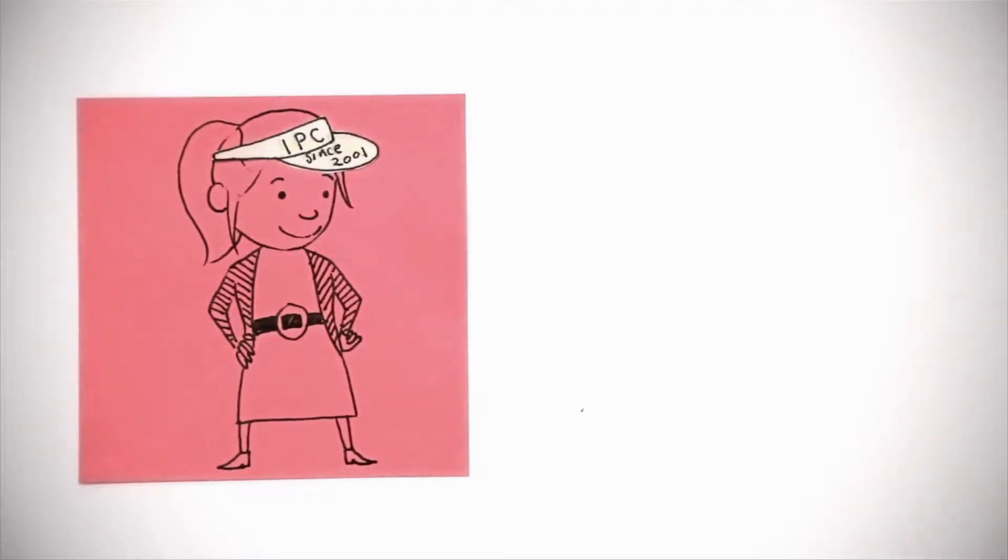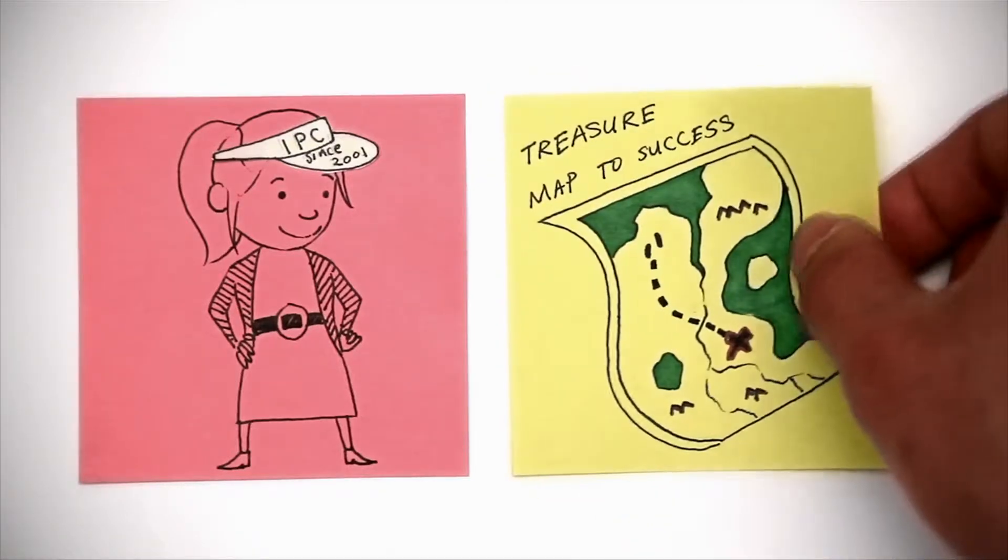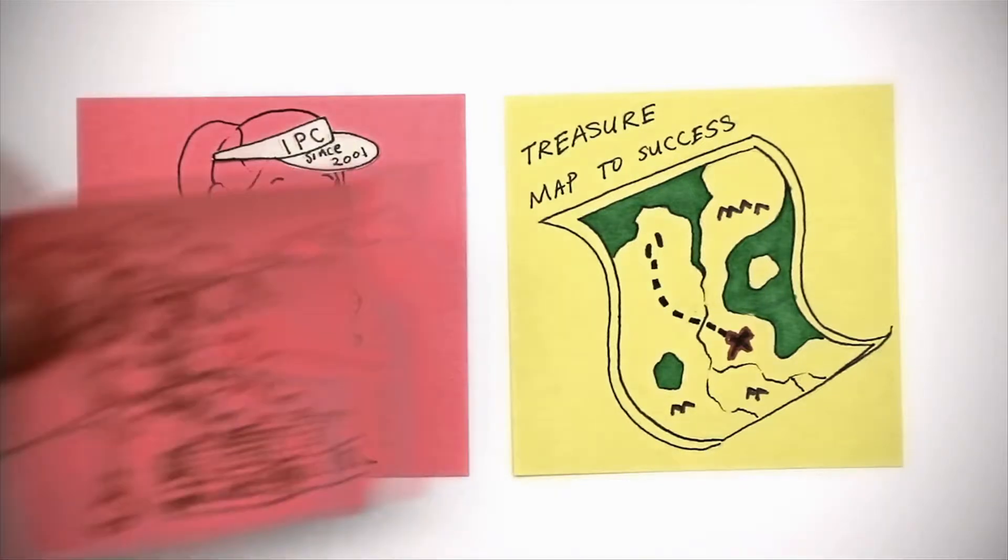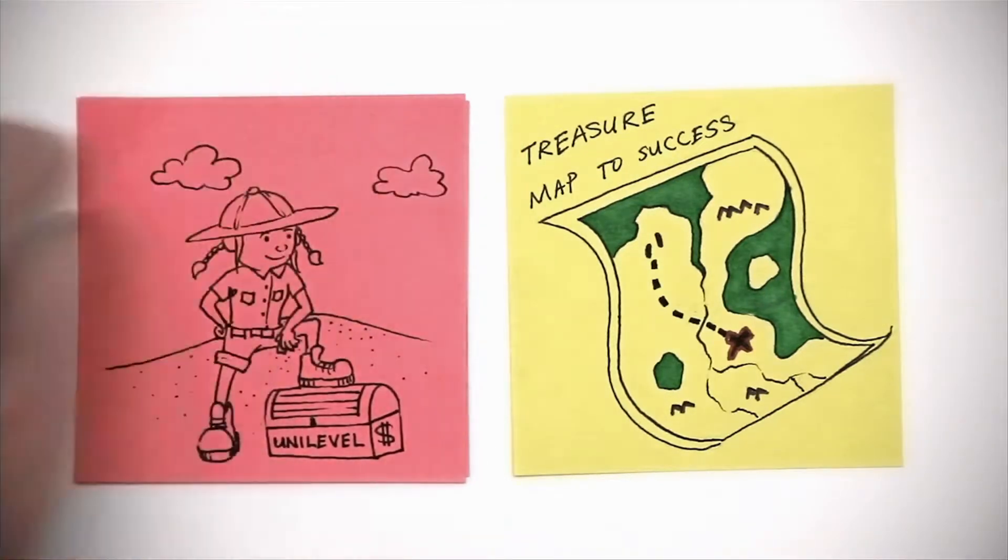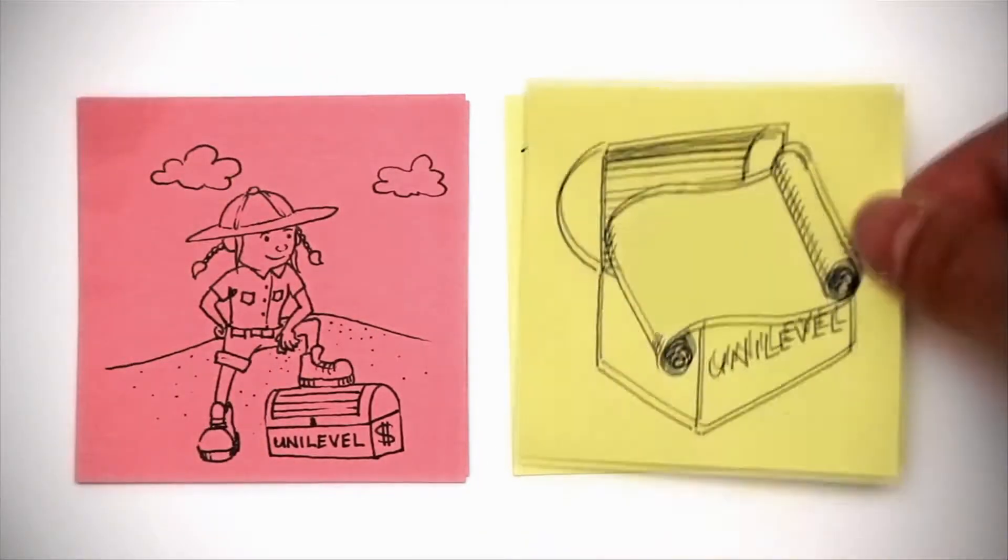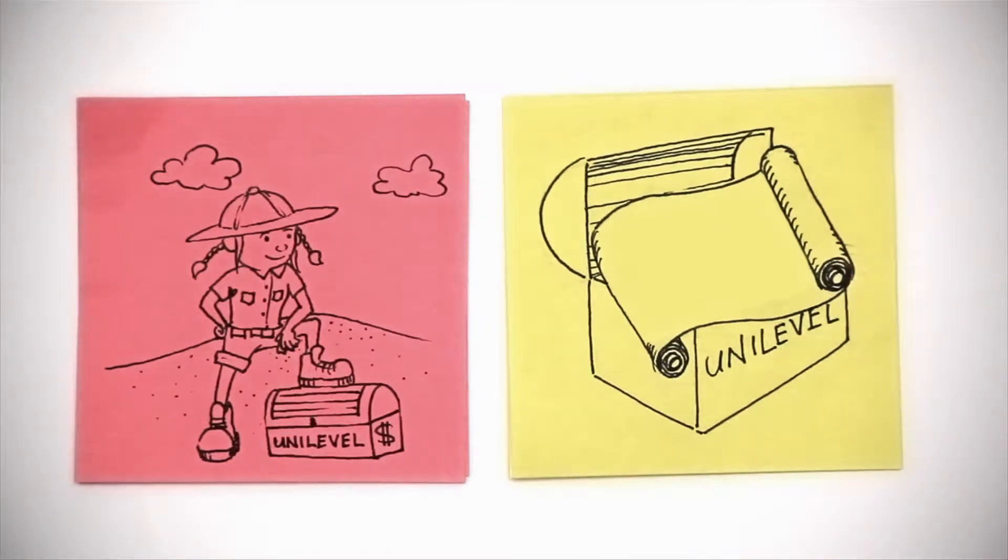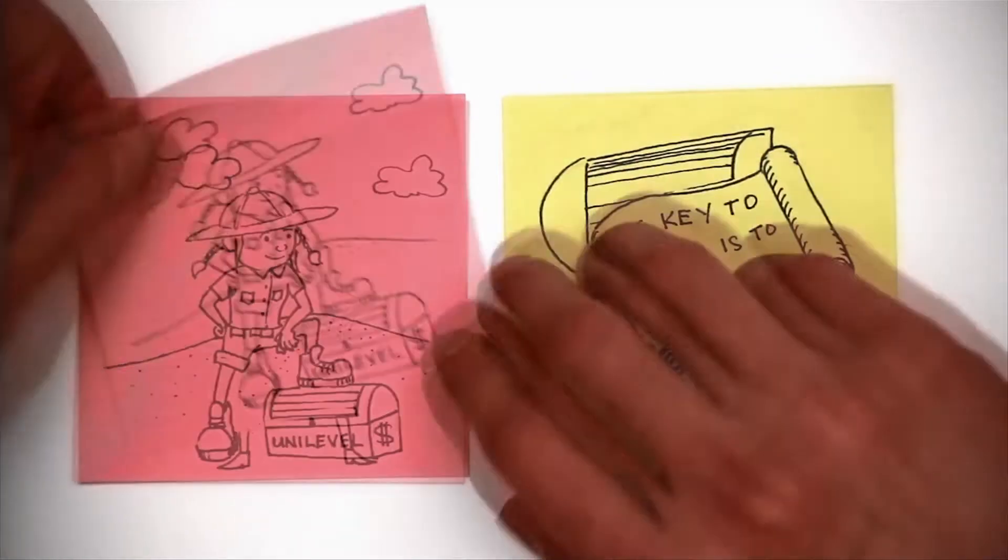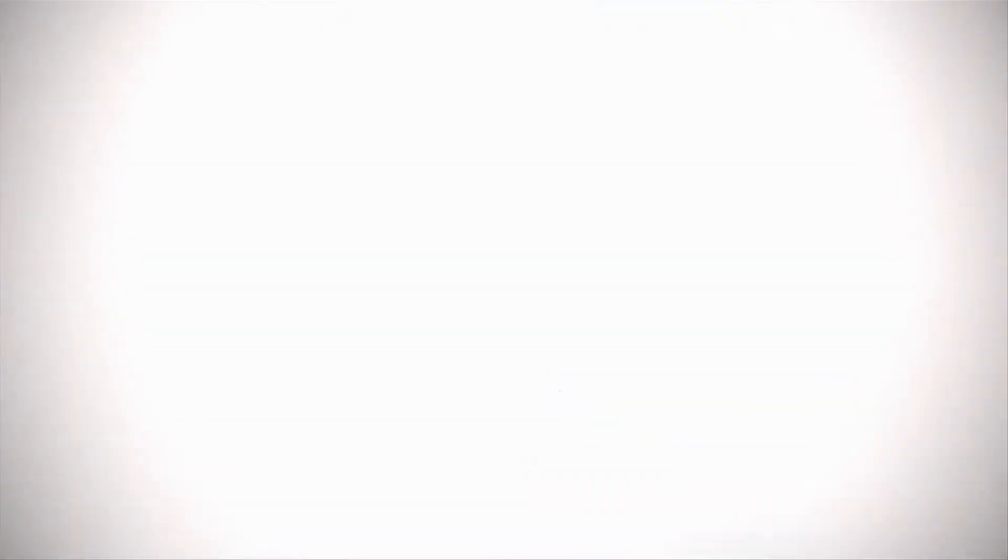But Lucy hasn't always been this successful. A few years ago, Lucy discovered the secret to long-term financial success: Unilevel Commissions. By helping her downline build their businesses, she was able to build her business. Let's take a look at how all of this happened.